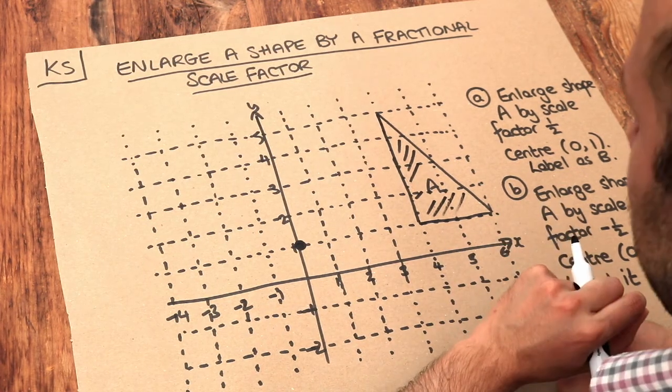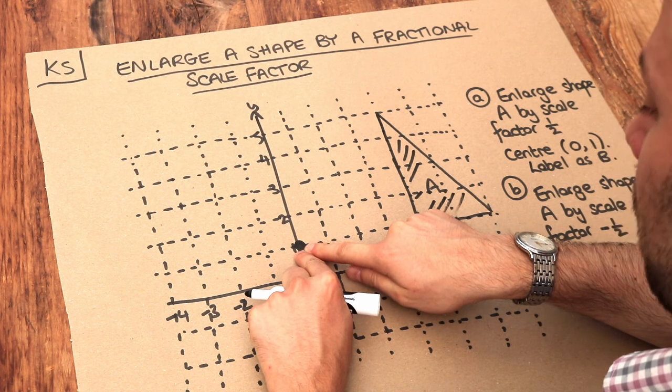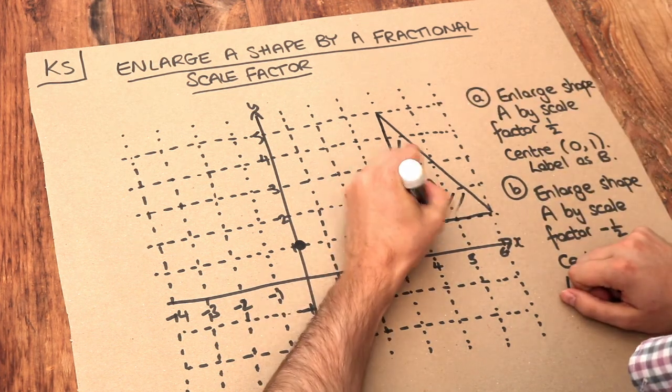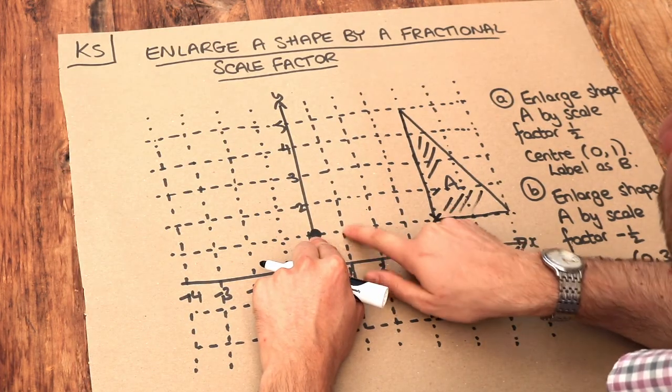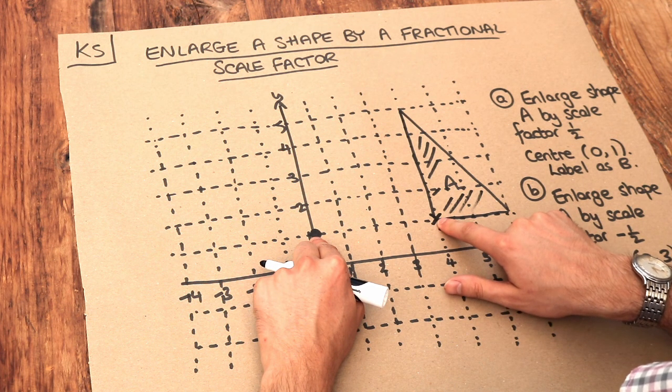The strategy from previous videos is to count the number of squares from the centre of enlargement to each point on the shape. Starting with this point here, from the centre of enlargement, we count 1, 2, 3, 4 right to get to that point.